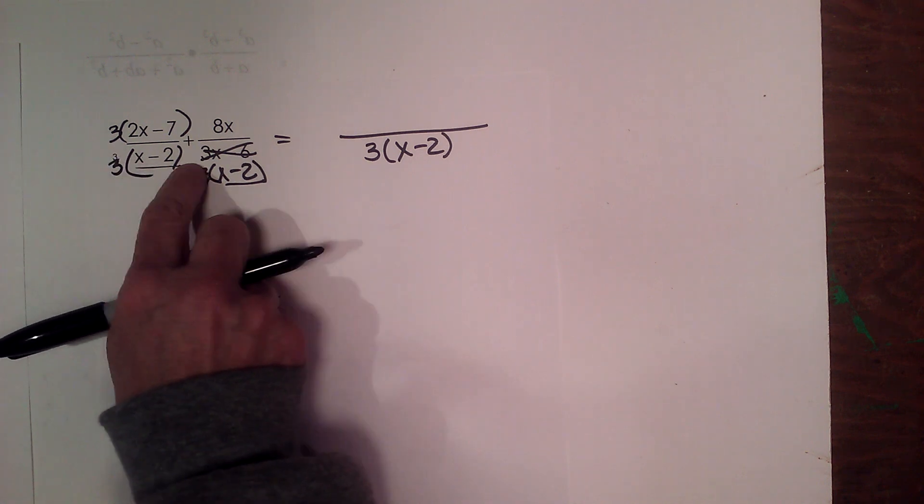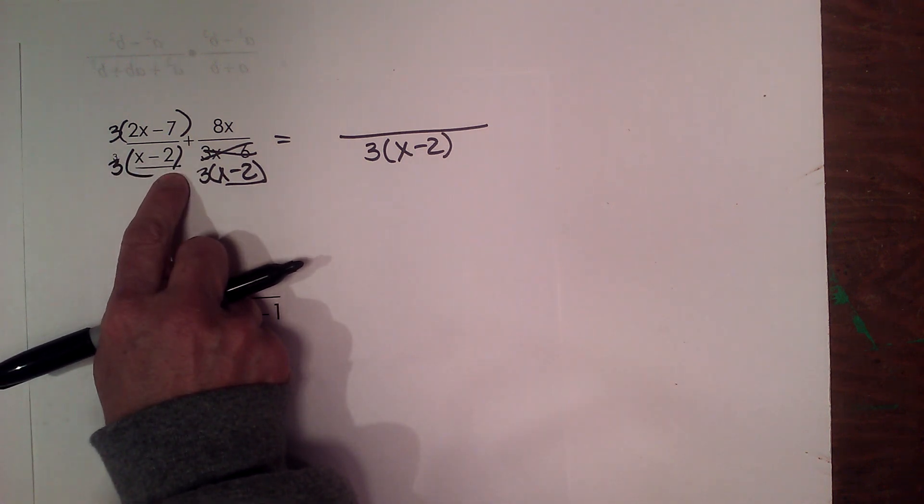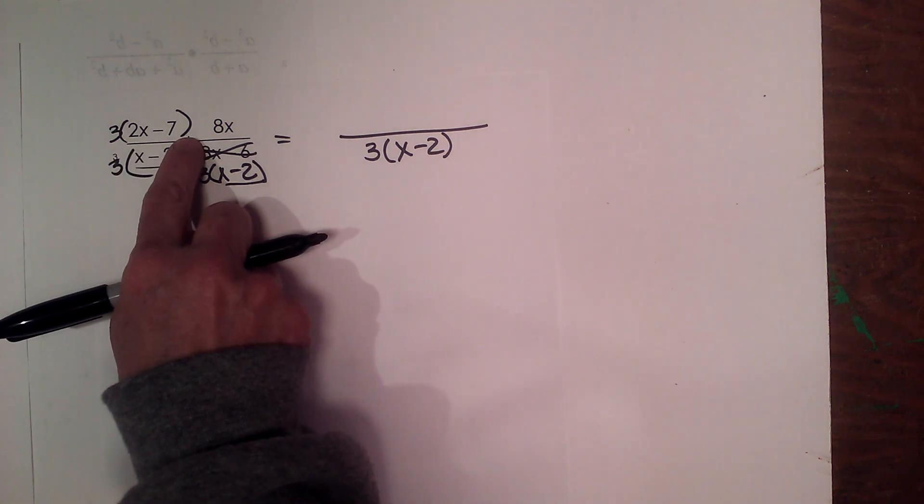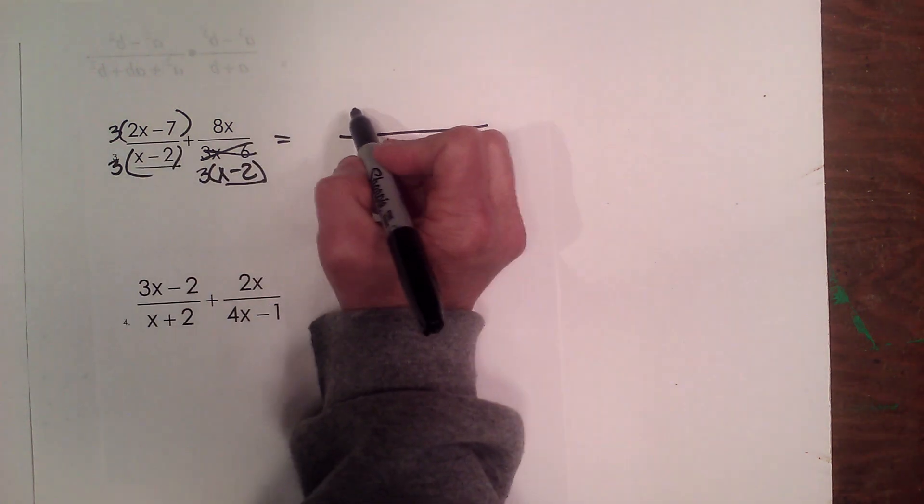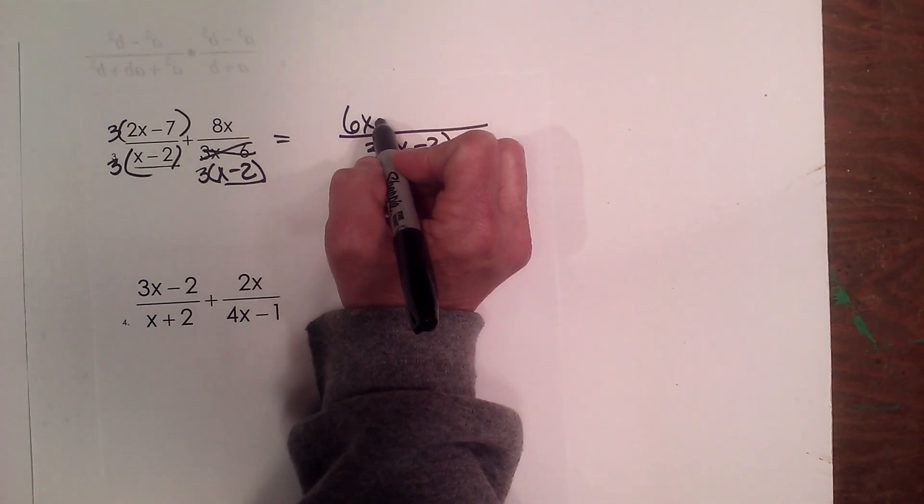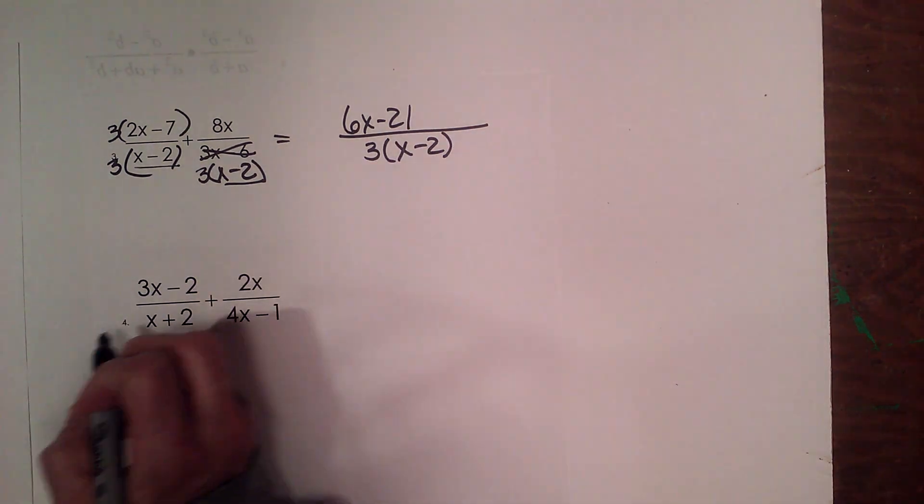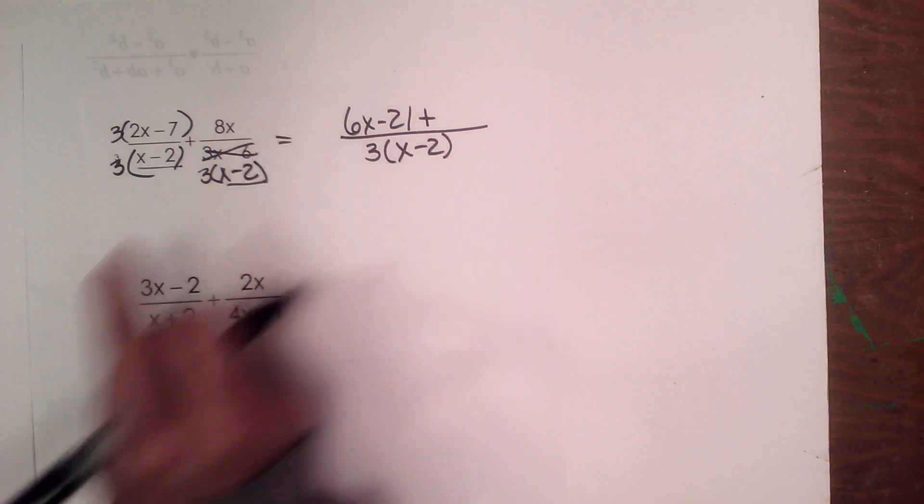So when I multiply this one by 3, I'm actually not going to multiply it, I'm just going to keep it factored. But I am going to distribute this positive 3 into my numerator. So that becomes 6x minus 21. And then I'm going to add to it my second expression.